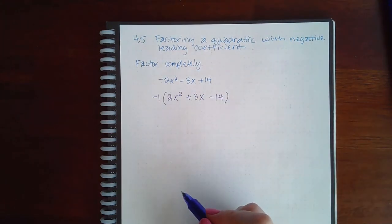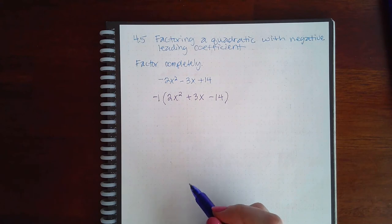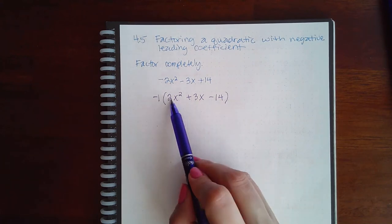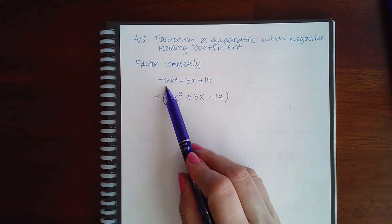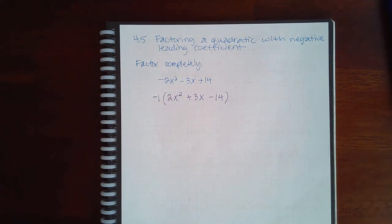It essentially changes the signs of everything when you factor out this negative 1. So if I were to distribute it back in, I would get all the original signs of the expression that was given.